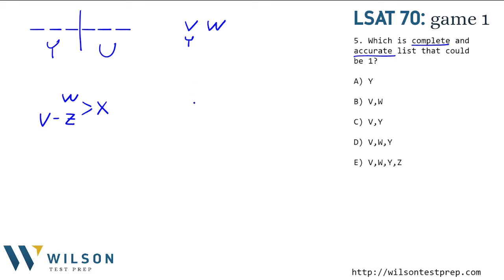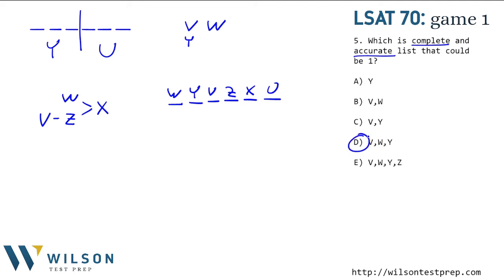Can W be first? If I put W first, then I can put Y in spot two, and then V, Z, X, and U in spots three through six. So W also can be first. All three — V, W, and Y — can be first. Answer D has V, Y, and W, so that's our complete and accurate list. The other choices either include Z (not accurate) or are missing one of the three possibilities (not complete). So D is correct.